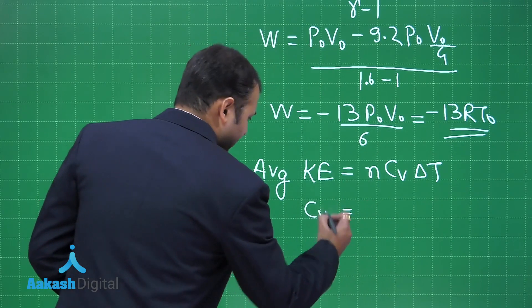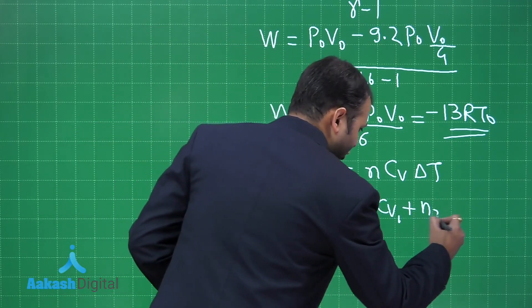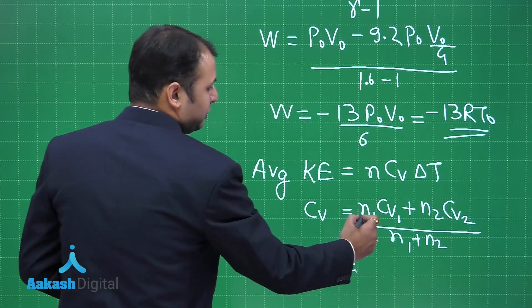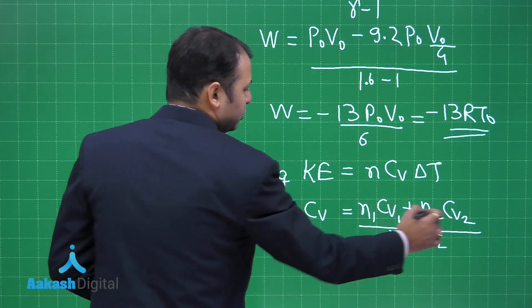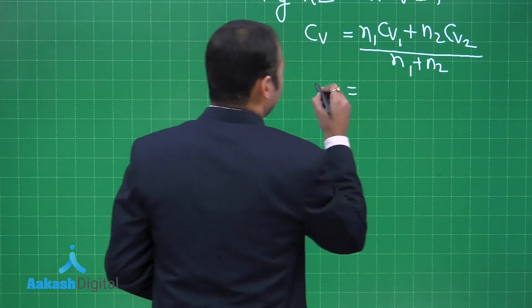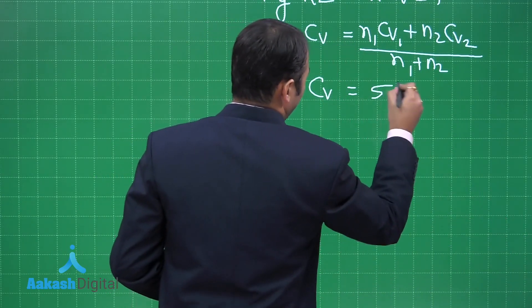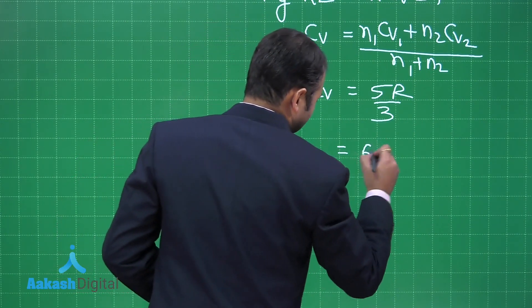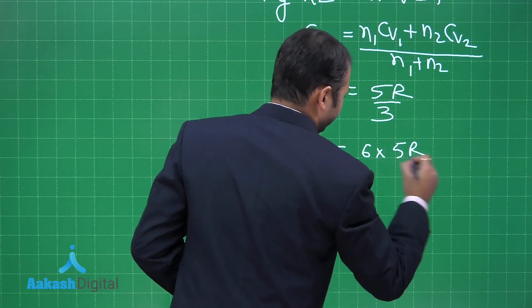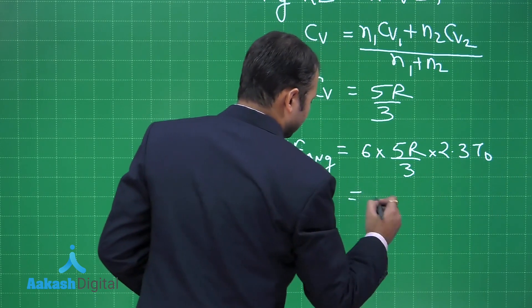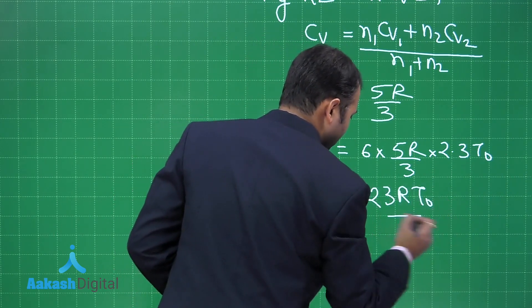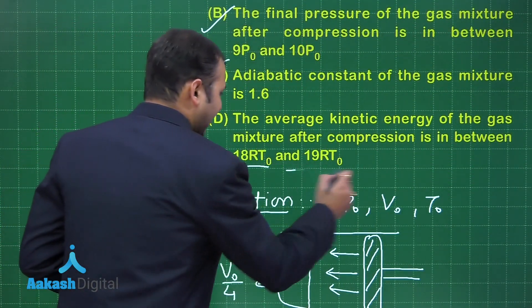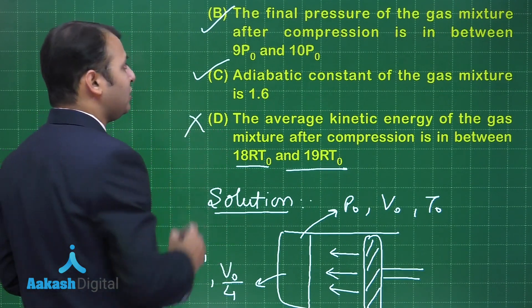The Cv of the mixture = (n₁Cv₁ + n₂Cv₂) / (n₁ + n₂) = (5 × 3R/2 + 1 × 5R/2) / 6 = 5R/3. The average kinetic energy at the final state = 6 × (5R/3) × 2.3T₀ = 23RT₀ approximately. Option D states it lies between 18 and 19RT₀, which is incorrect.